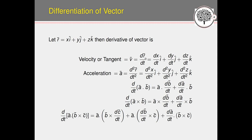Acceleration is the rate of change of velocity, so it equals dv/dt. Since v = dr/dt, acceleration = d²r/dt² = (d²x/dt²)i-cap + (d²y/dt²)j-cap + (d²z/dt²)k-cap. For the derivative of a dot product: d/dt(a·v) = a·(dv/dt) + (da/dt)·v.